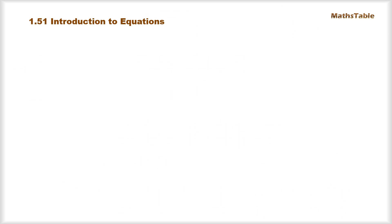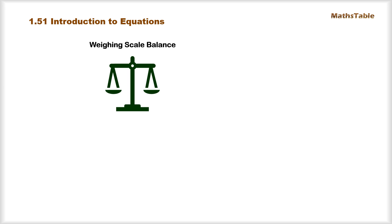Before we go into detail into equations, let's take a simple example of a weighing scale balance, which we commonly see whenever we visit any fruit or vegetable shop. When we buy some items, we need to weigh them first. We place those items of unknown mass on one side of the balance, and we check the mass of those items by comparing it with placing the known masses on the other side.